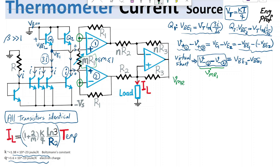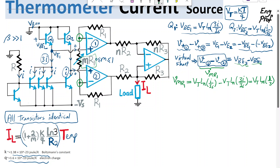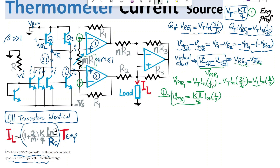So the voltage of MR1 equals — substituting for VBE2 and VBE1 — VT·ln(I/IS) minus VT·ln(3I/IS). Simplifying, I get VT·ln(1/3). IS cancels out and I cancels out, giving 1/3. Substituting for VT from equation 1, voltage of MR1 equals (KT/Q)·ln(1/3). Let's keep this as equation 2.